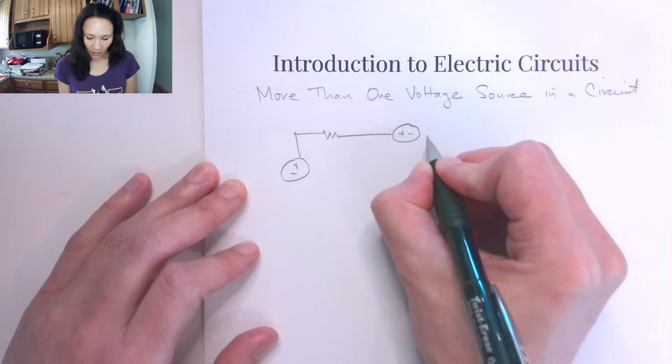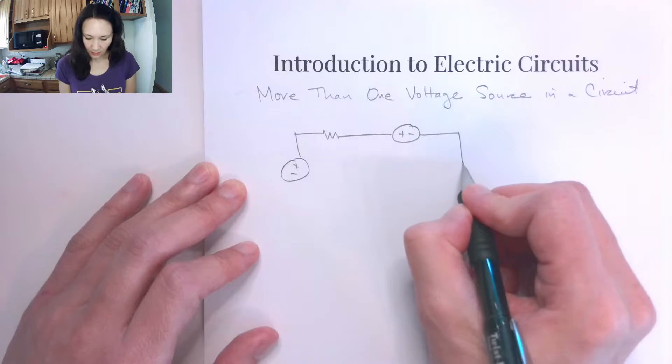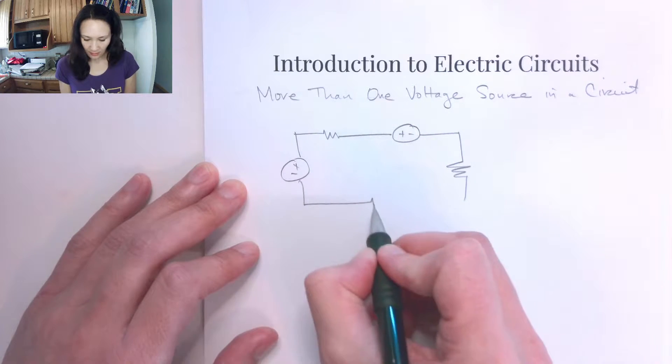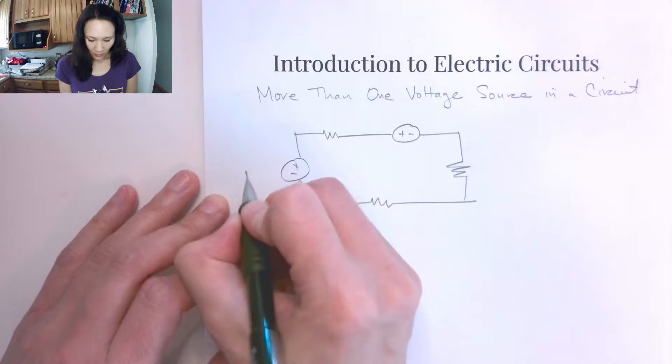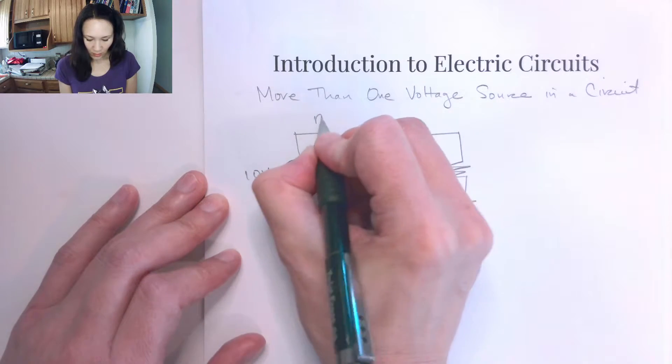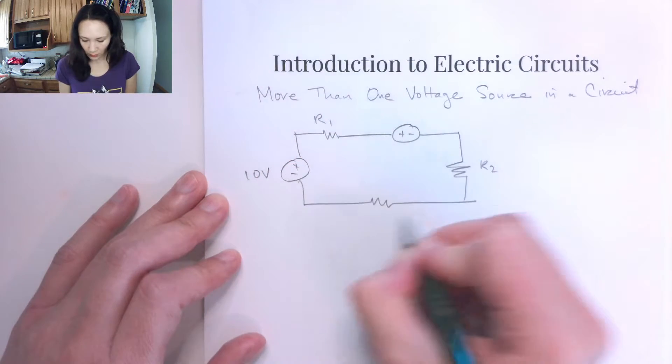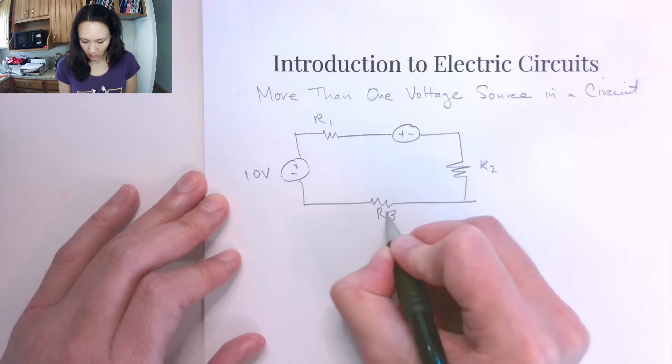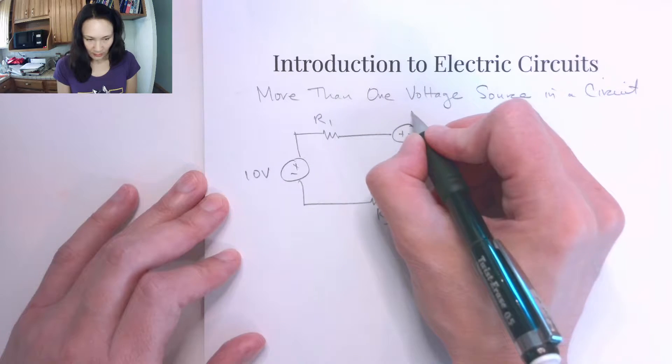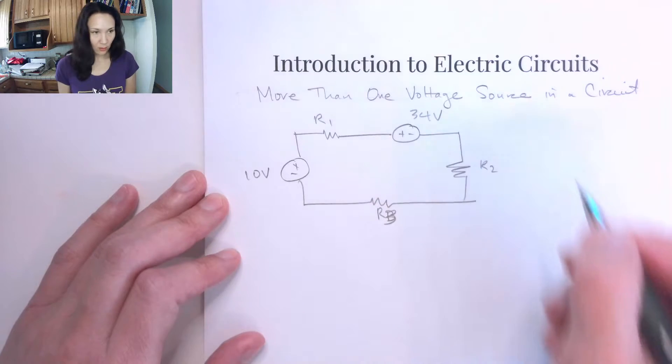So if we have multiple voltage sources in a series circuit like this, suppose this is 10 volts, we'll call this R1, R2, R3, we can let this be, say, 34 volts.